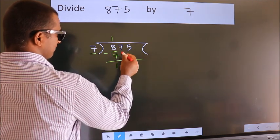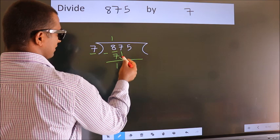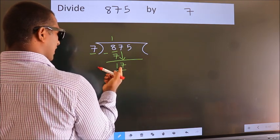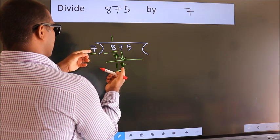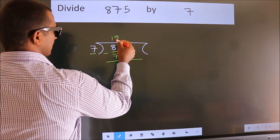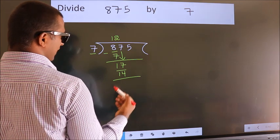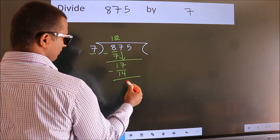After this, bring down the beside number. So 7 down, so 17. A number close to 17 in the 7 table is 7 twos 14. Now we subtract. We get 3.